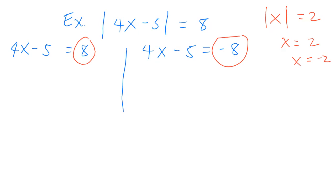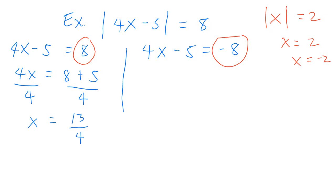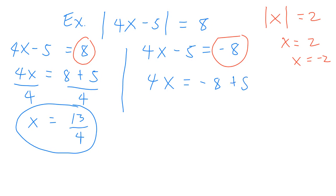Solving for x — it's like working with a linear equation. For the first case, 4x equals 8 plus 5, so x equals 13 over 4. For the second case, 4x equals negative 8 plus 5, so dividing both sides by 4 gives x equals negative 3 over 4.